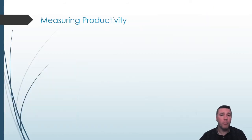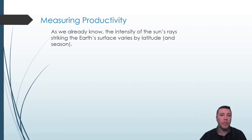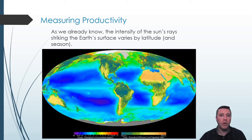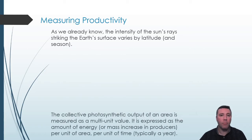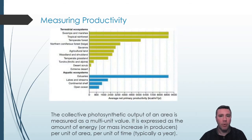We already know from a previous topic that the intensity of the sun's energy reaching the Earth's surface varies by latitude and by season. The equatorial and tropical regions are subjected to more intense and consistent solar radiation. During summer months, like July and August in the Northern Hemisphere and January and February in the Southern Hemisphere, more solar energy is available. The photosynthetic output of a region is measured as a multi-unit value — an amount of energy or biomass increase in producers for a given unit of area over a given length of time. In this chart, for example, we can observe that the savannah's productivity is approximately 3,000 calories per square meter per year.